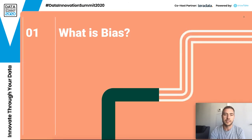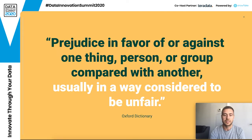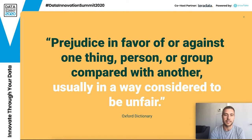So, what is bias? A classic dictionary definition is: prejudice in favor of or against one thing, person, or group compared with another, usually in a way considered to be unfair. Sometimes we think that bias is always negative, but you can also just be favoring one group — and that means all the other groups are being treated unfairly.